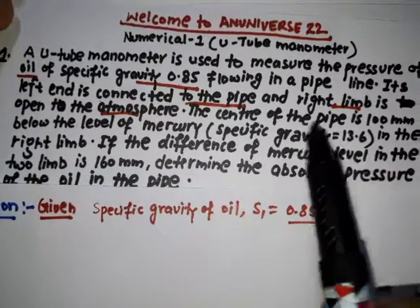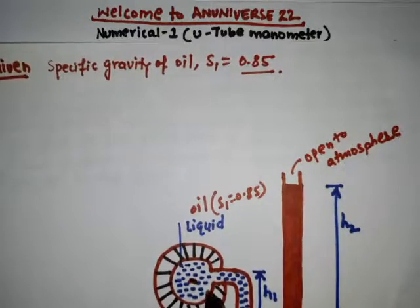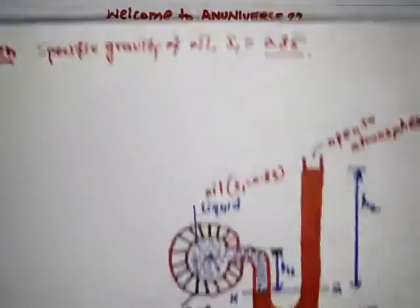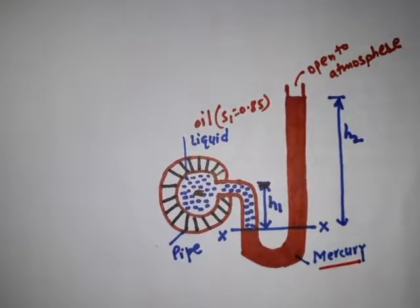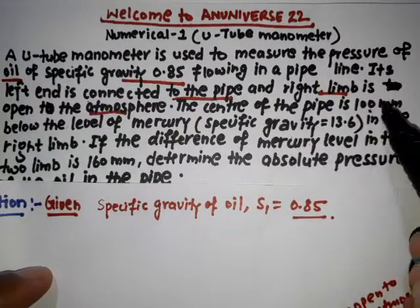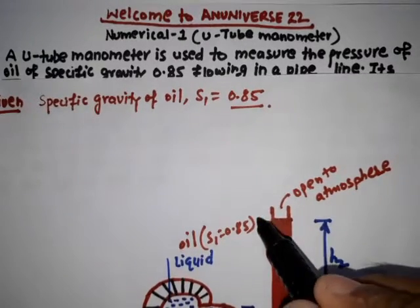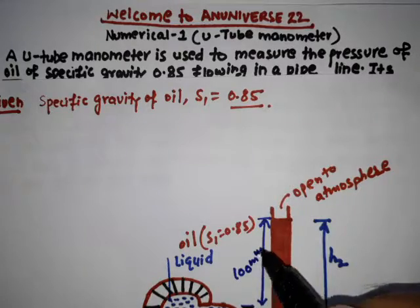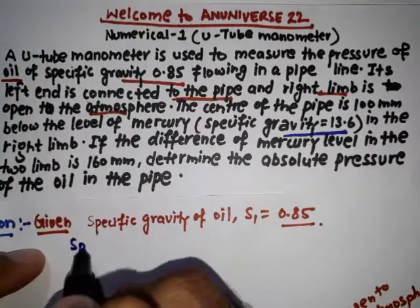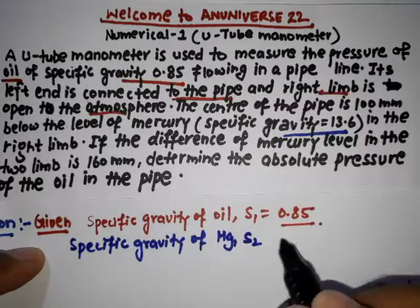The center of the pipe is 100 mm below the level of mercury. In the diagram, the center of the pipe is 100 mm below the mercury level. The fluid in the U-tube manometer is mercury, which is the heavy fluid, and the specific gravity of mercury is S2 = 13.6. So the distance from the pipe center to the mercury level is 100 mm.